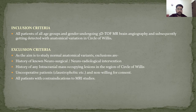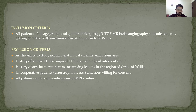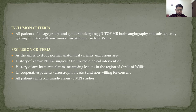Inclusion criteria: all patients of any age group and gender undergoing 3D time of flight MR angiography and subsequently detected with anatomical variation in the circle of villas. Exclusion criteria, as the aim of the study is to study normal anatomical variants: history of known neurosurgical or neuroradiological intervention; history of any intracranial mass occupying lesion in the region of the circle of villas; uncooperative patients or those not willing to consent; and all patients with contraindications to MR studies.